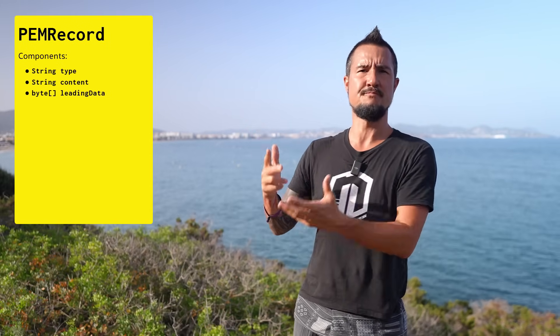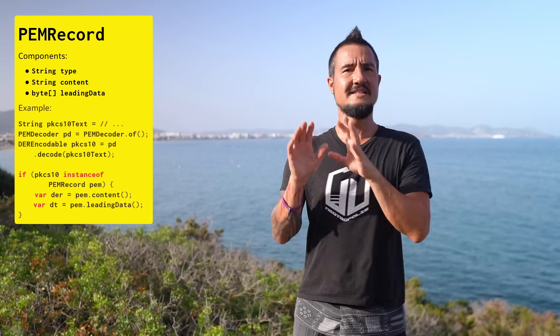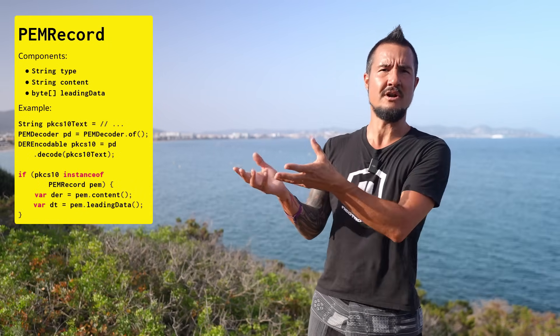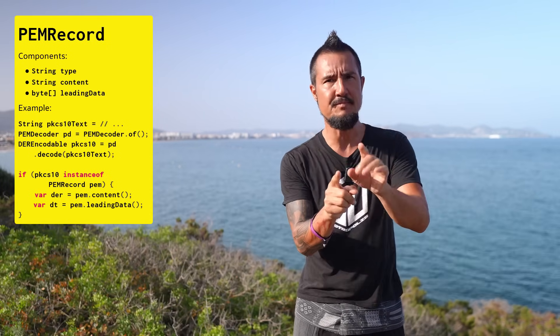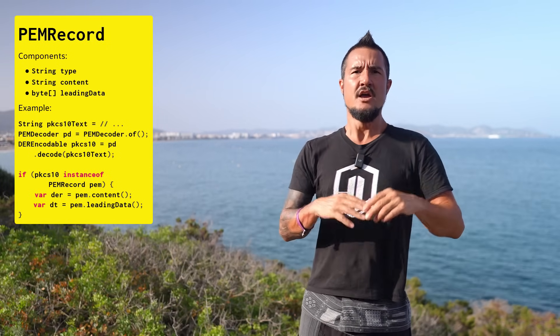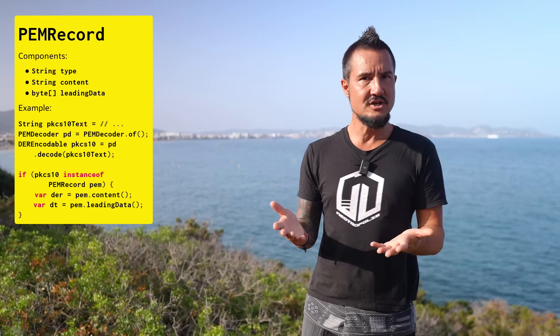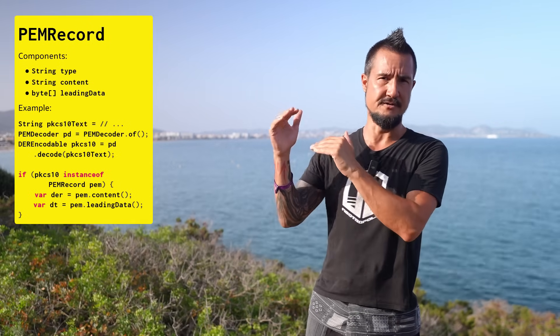PEMRecord is indeed a record with three components: String type — the header tag like PRIVATE KEY, for example; String content — the Base64-encoded PEM body; and a byte array leadingData — any content preceding the PEM header. A decode call will return a PEMRecord if there is no Java platform type to represent a cryptographic object, or if you explicitly ask for this type — we'll see how in a few minutes. You may want to do that because it's the only way to access the data that precedes the PEM header.